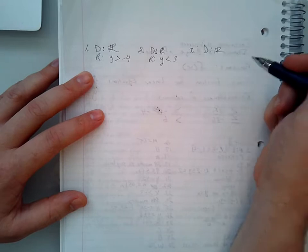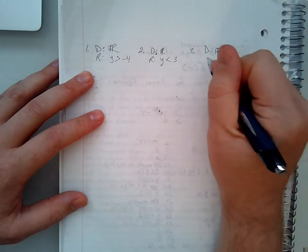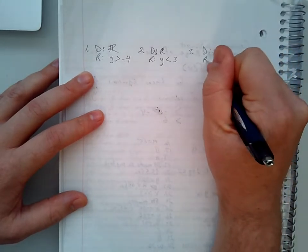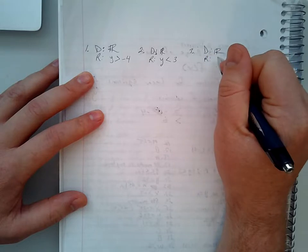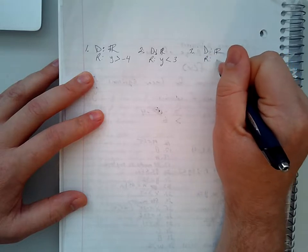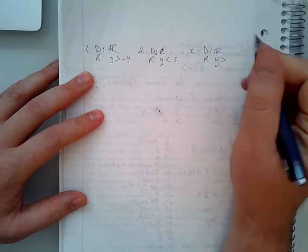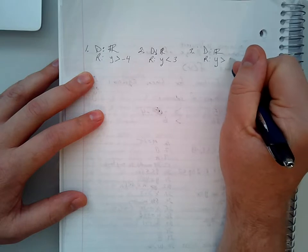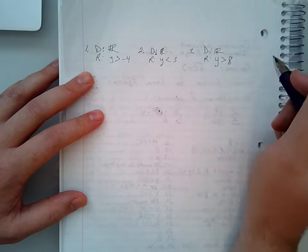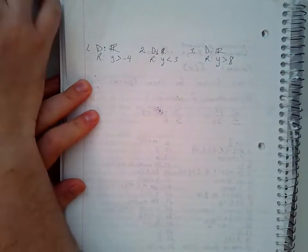Number three: we have our domain again, which is all real numbers. We have a positive 'a' for our equation, so we know that our range will be y is greater than our asymptote at positive eight.